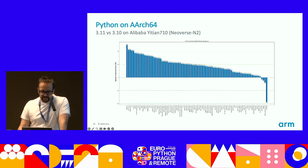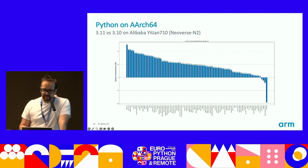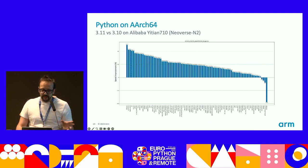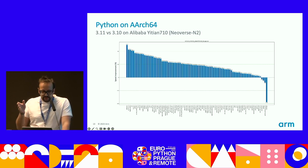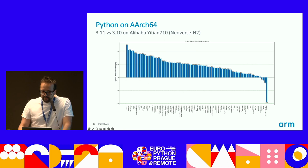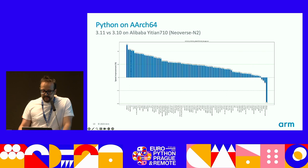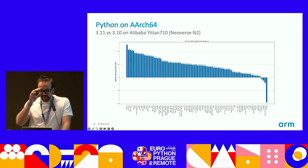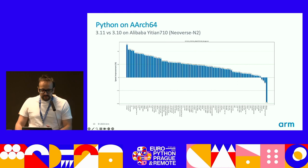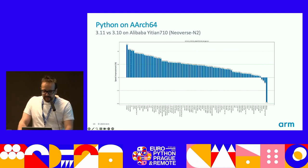Similarly, the same behavior occurs on Neoverse N2, the next generation of the N series, and the first processor based on ARMv9 — found for instance on Alibaba Cloud. An experiment on Neoverse V1 shows consistent behavior as well. V1 can be found on AWS Graviton3 instances and is based on ARMv8.4-A. Bottom line: nothing to worry about — Python 3.11 performs as expected on ARM64.